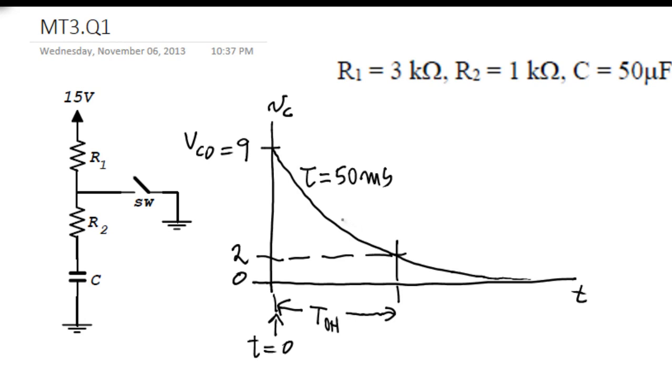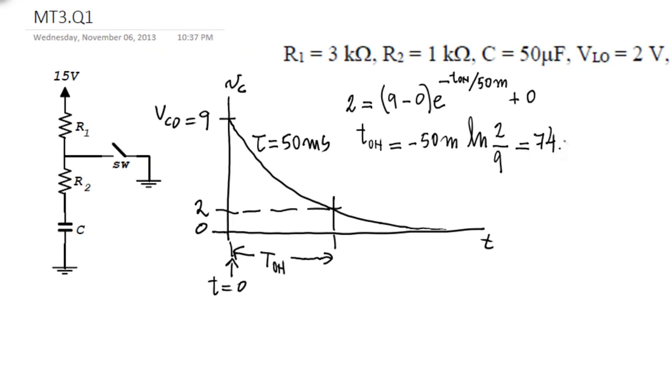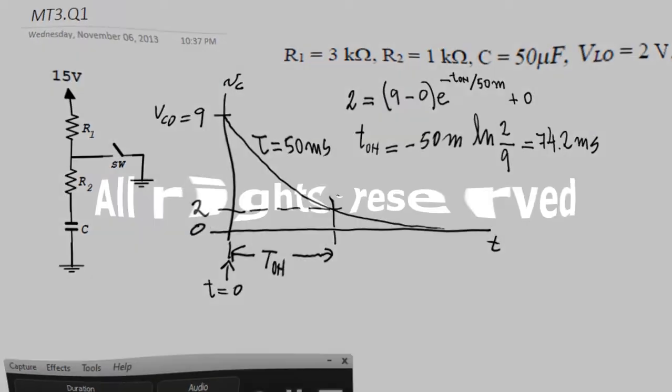We can write now this curve as a function of time. And that T equals T-ON. The value should be 2. And we write... which is 74.2 milliseconds, which is the answer to the second part of this question. T-ON.